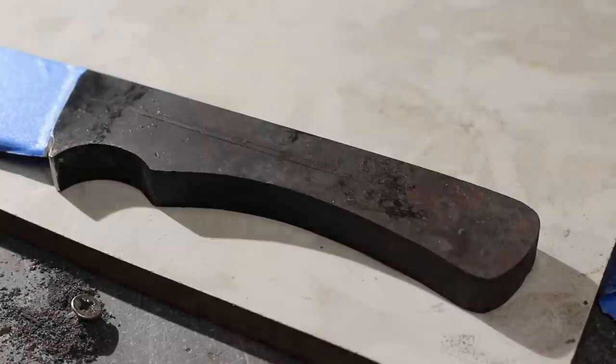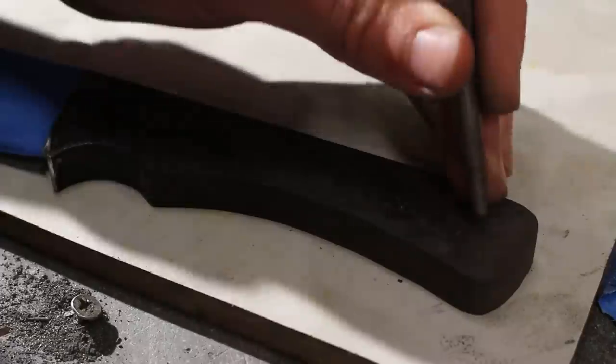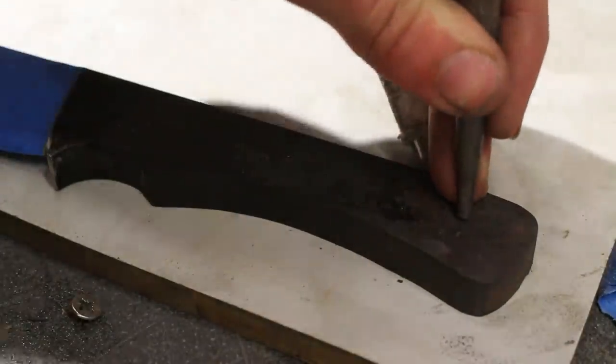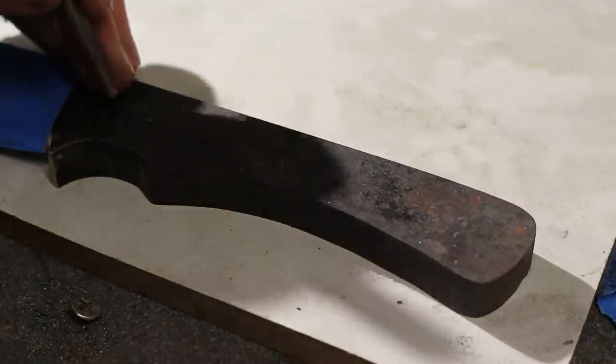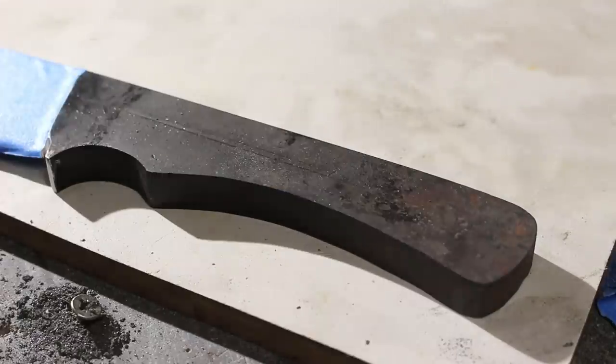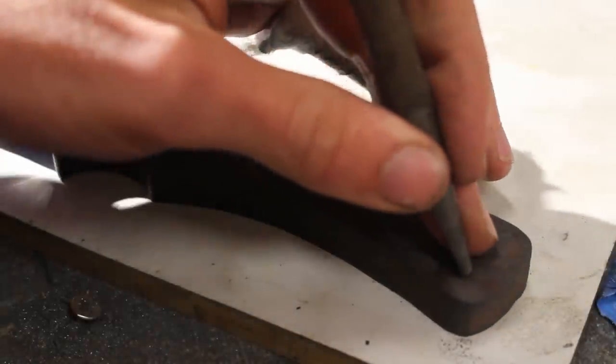At this point I noticed that I kind of screwed up again and I forgot to drill the handle holes before I hardened the knife. I kind of thought that since the handle was so thick it wasn't going to harden as much as the blade and that I'd still be able to drill it, but this turned out not to be true. It was too hard to even center punch it.